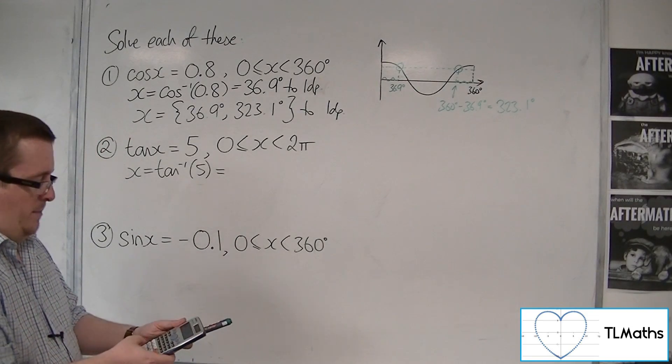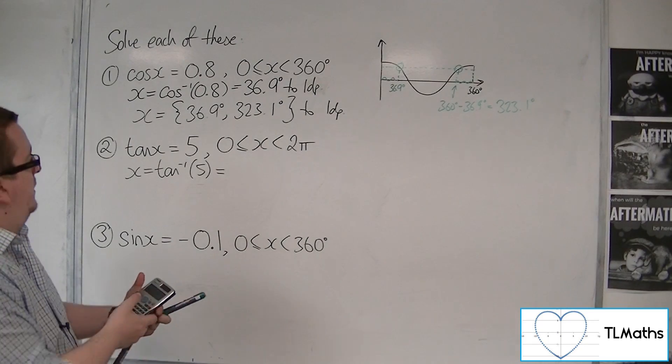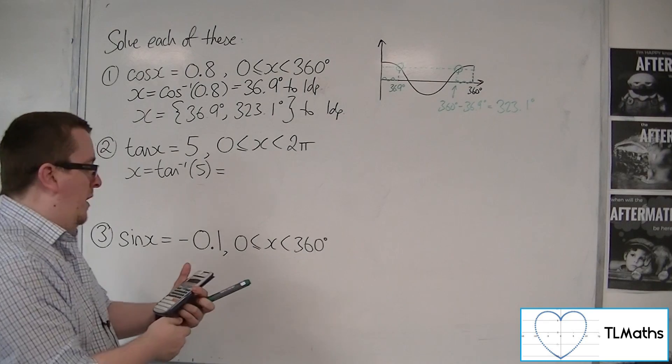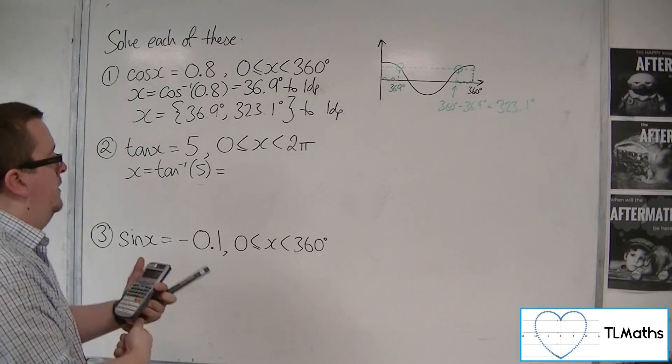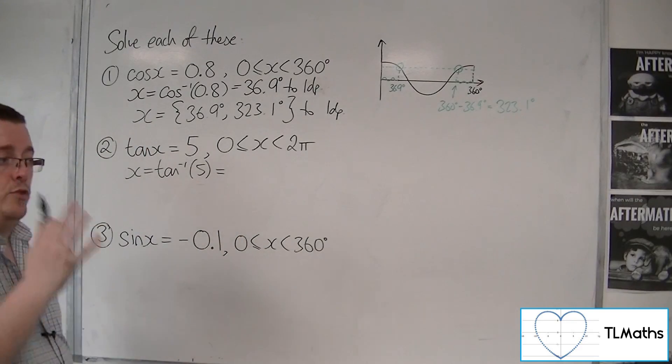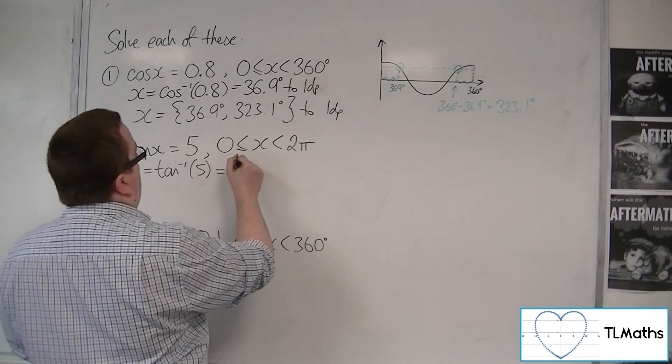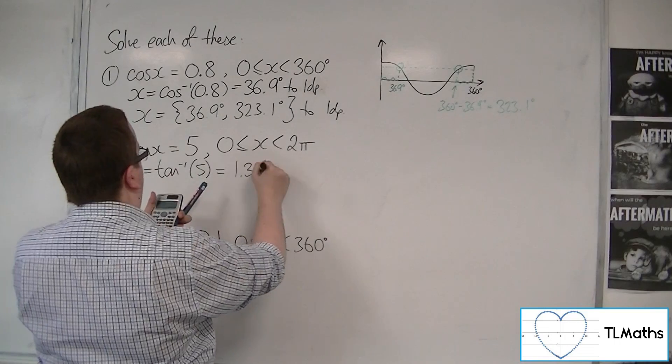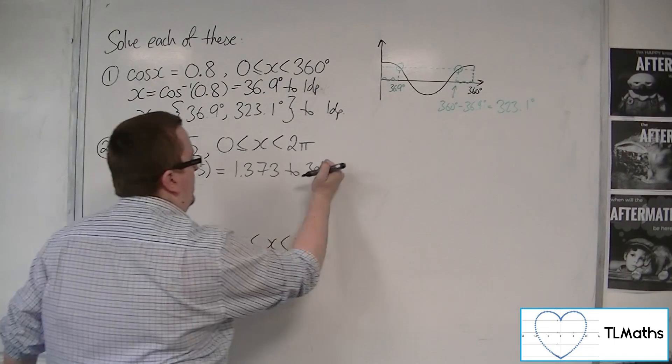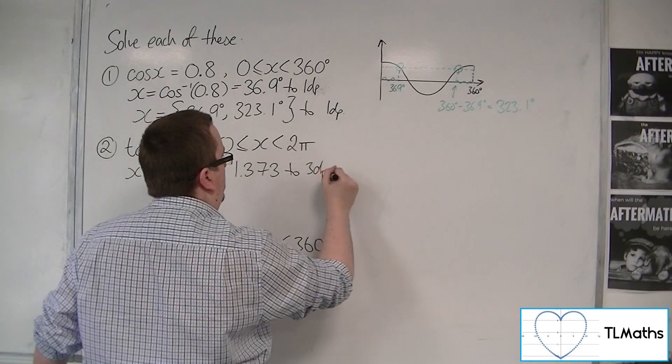Shift, mode, and then number 4 to go into radians. So inverse tan of 5, or arctan, is 1.373 to 3 decimal places. I usually keep radians to 3 decimal places. So 1.373 to 3 decimal places.